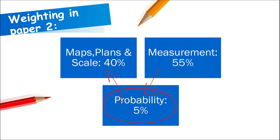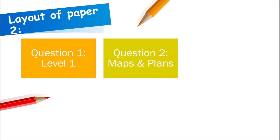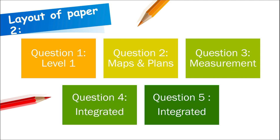Looking at the layout of paper two: question one is level one — easy to score, so make sure we start with that. Question two covers maps and plans, question three covers measurement, and then questions four and/or five are integrated questions combining a little of each topic, including some probability.